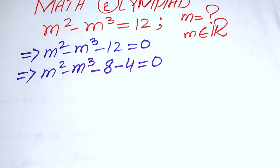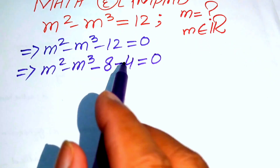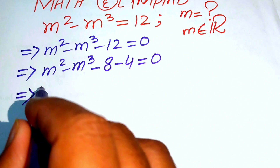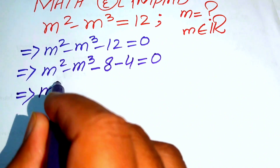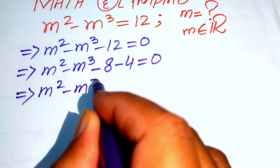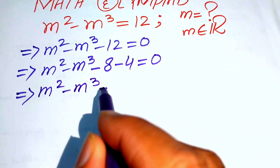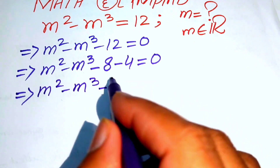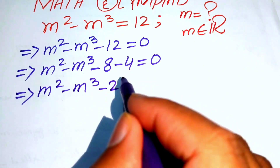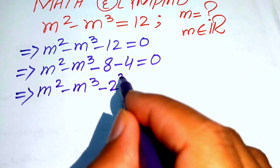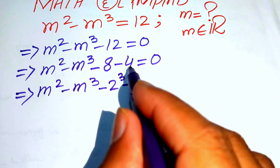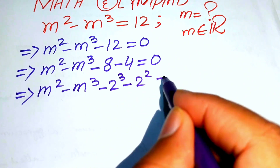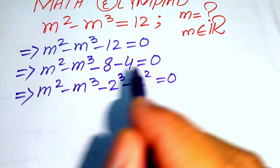We rewrite the equation again, writing 8 as 2 cubed and 4 as 2 squared, so we have m squared minus m cubed minus 2 cubed minus 2 squared equals 0.